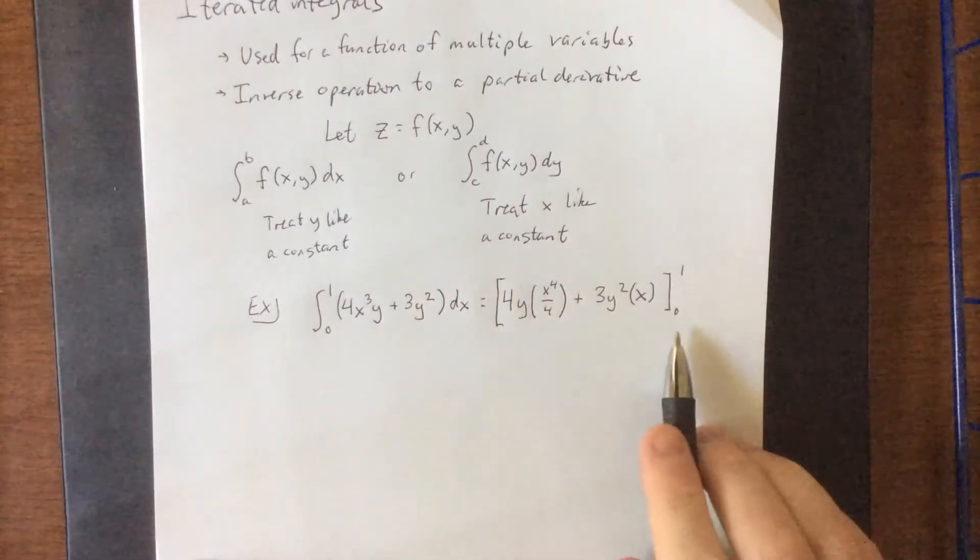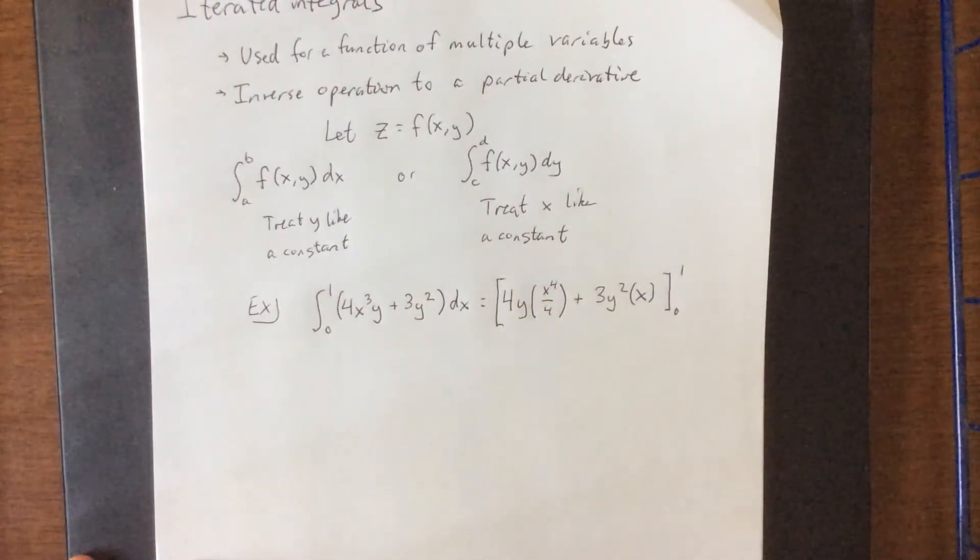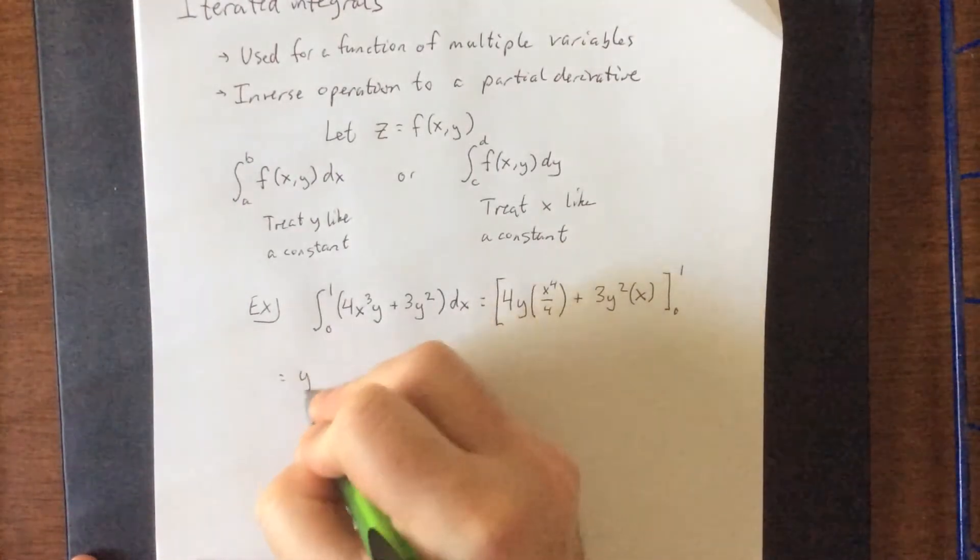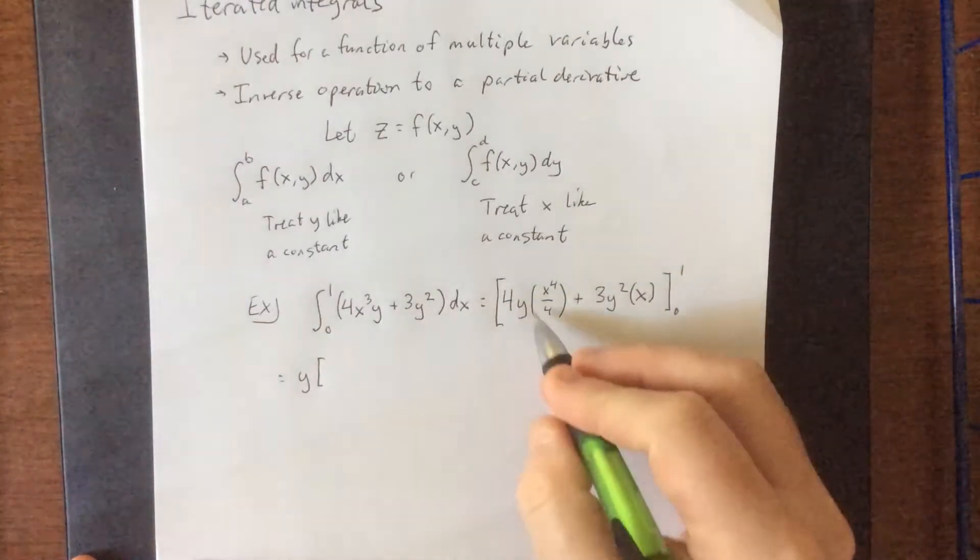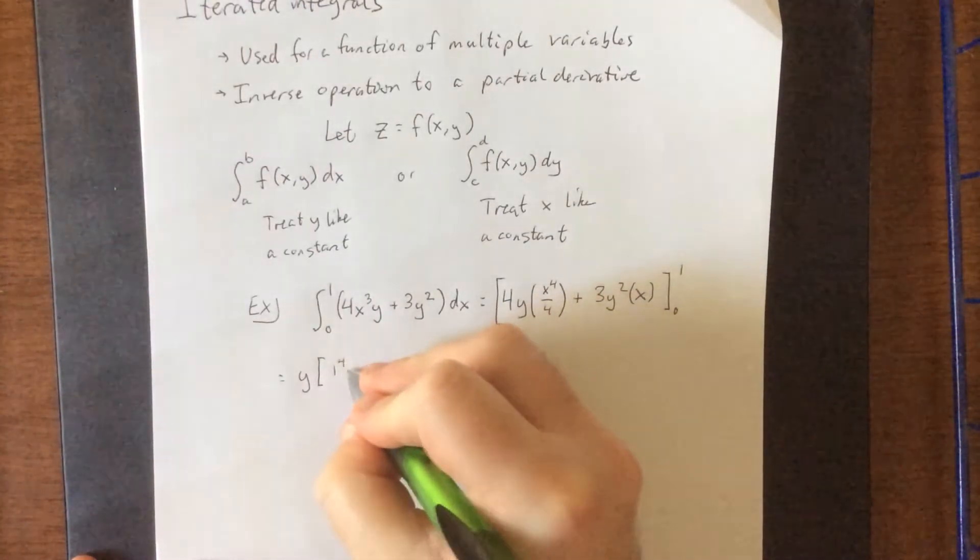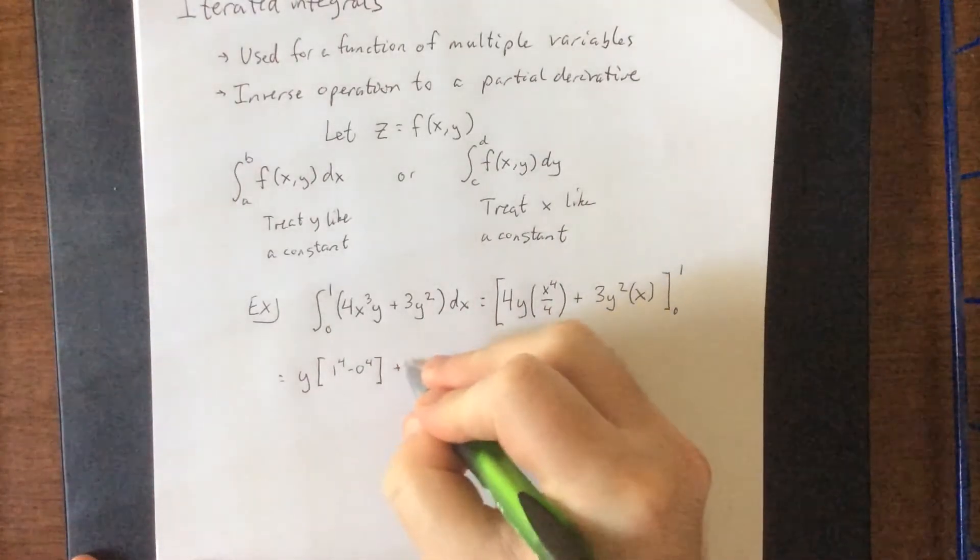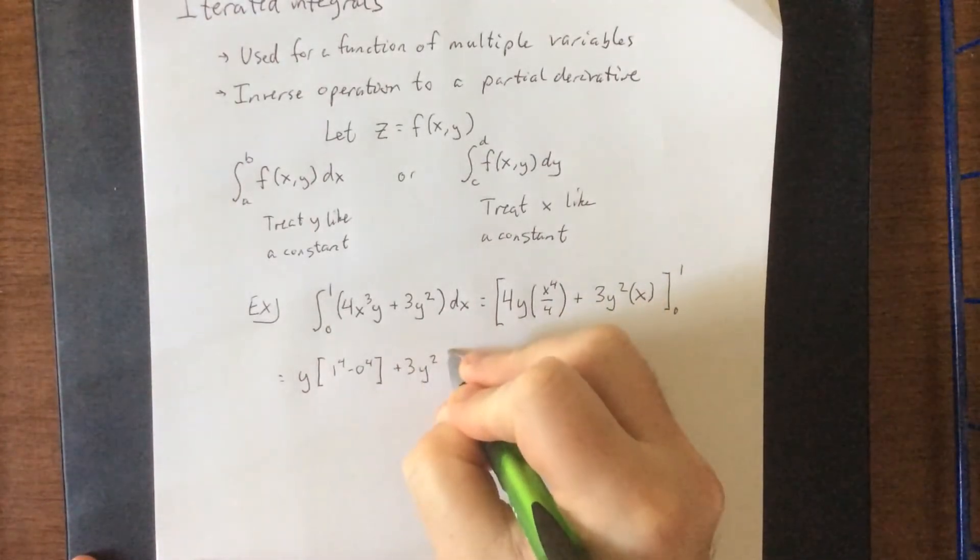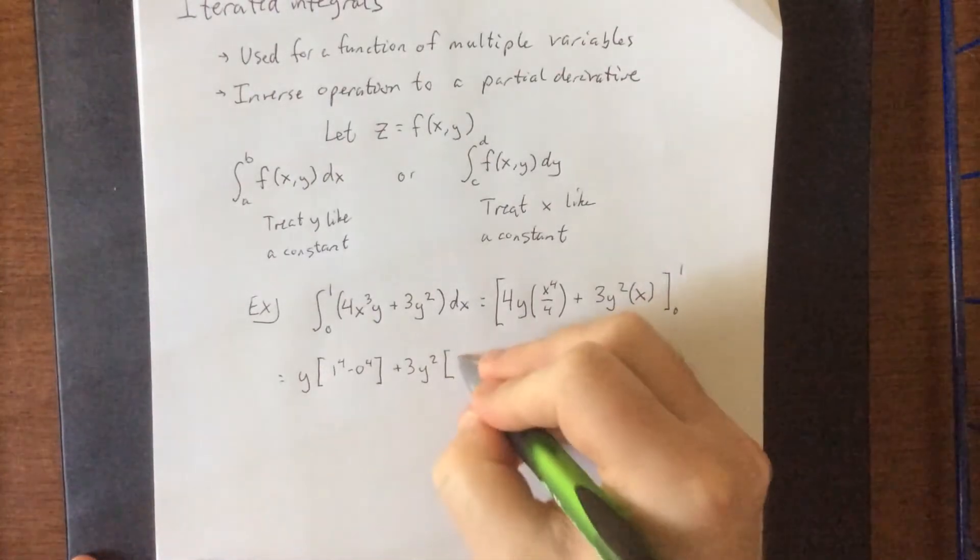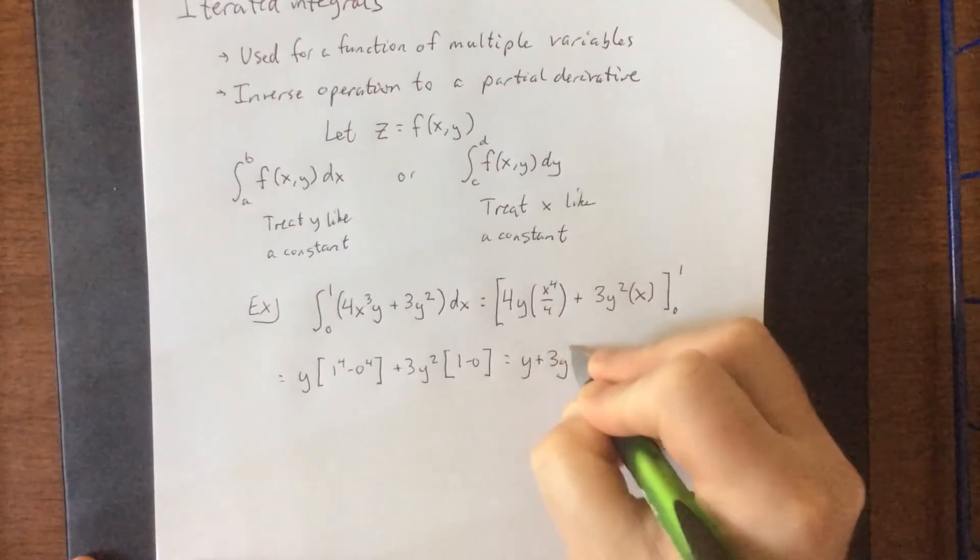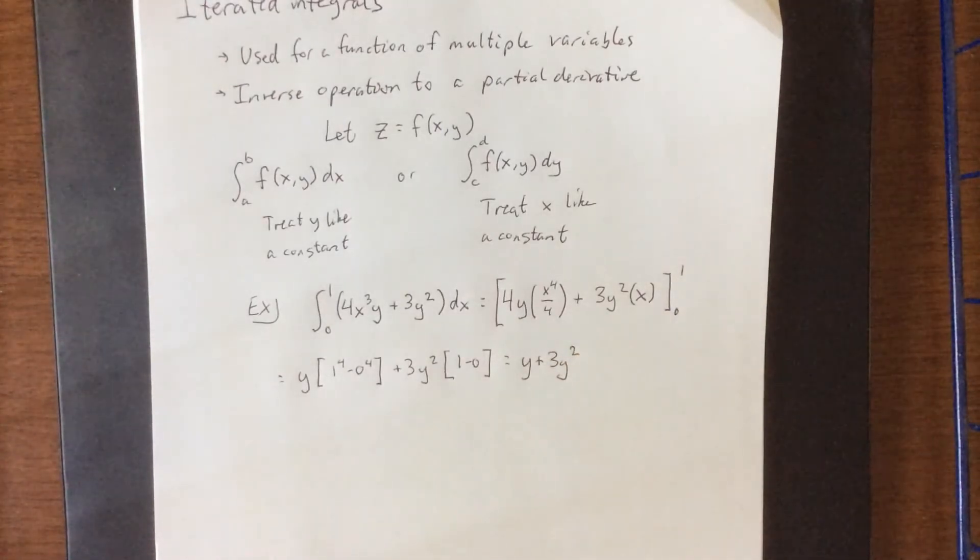The integral of a constant with respect to a variable is that constant times whatever the variable was. Then, of course, we will be evaluating that from 0 to 1 in terms of x. So for the first term over here, the 4s will cancel each other out. We'll be left with y times 1⁴ minus 0⁴, upper bound minus lower bound, plus 3y² times 1 minus 0, once again upper bound minus lower bound. What results is a function in terms of only y. y is the only variable left because we have integrated with respect to x.